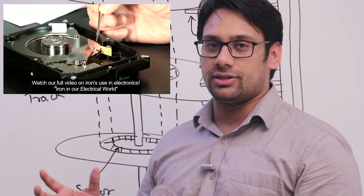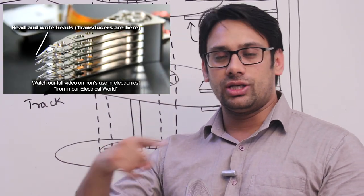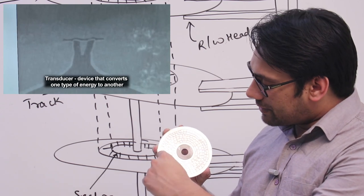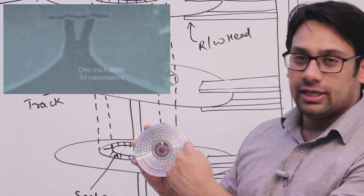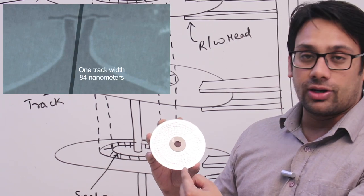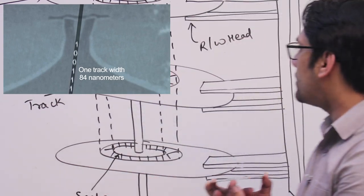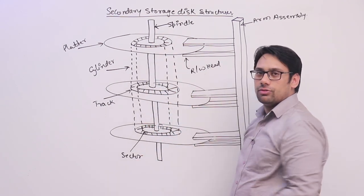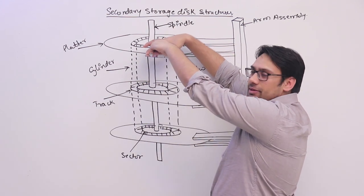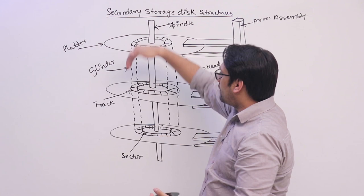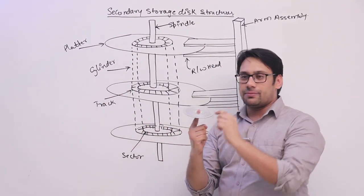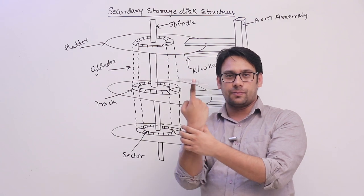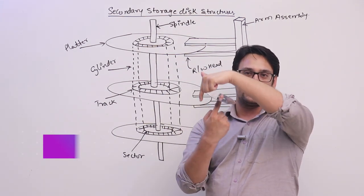There is a video included here showing the working mechanics of secondary memory — a hard disk drive. Now in this disk we have something called tracks. These round circles are tracks, and tracks are divided into sectors. Each platter has two surfaces: upper and lower. To rotate the platters, there is something called a spindle. The spindle rotates and causes the disk to rotate.